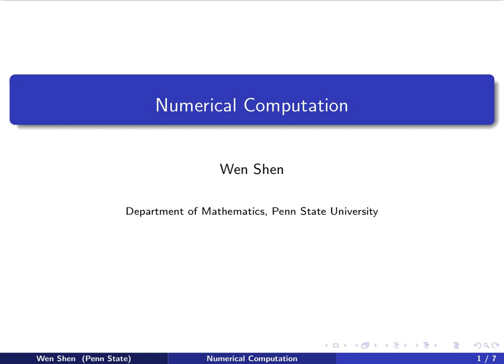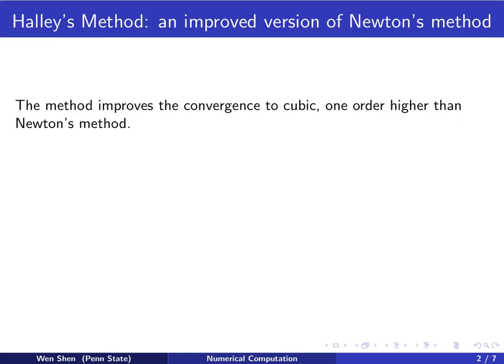You can view this video after you finish the additional video number 1 of this chapter. Here we look at another method which is also an improved version of Newton's method. This is called Halley's method. The method would improve the convergence to even a cubic convergence, which is one order higher than Newton's method.